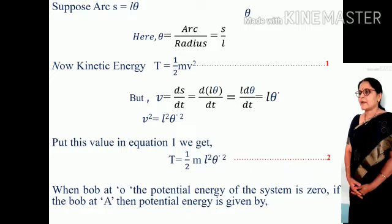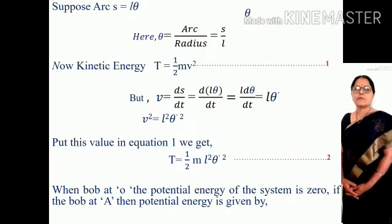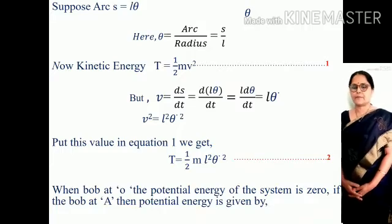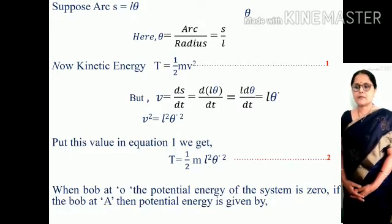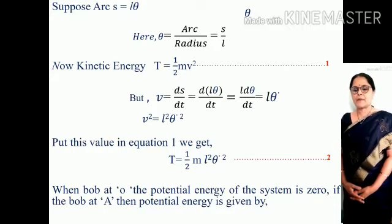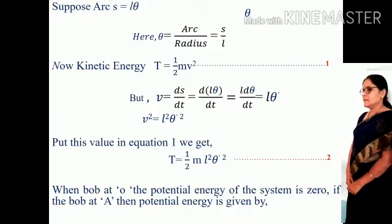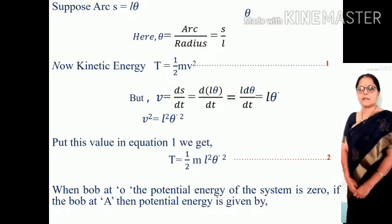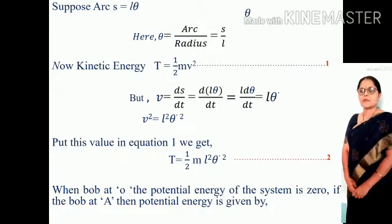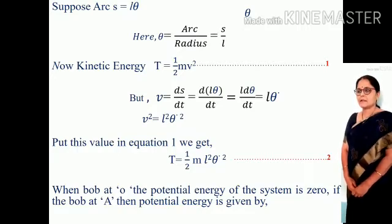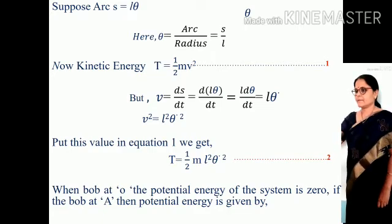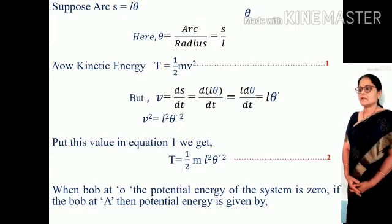But in classical mechanics, single time derivative can be written as one dot and double time derivative as double dot. Hence, L d theta by dt equals L theta dot. Therefore, by taking the square of velocity, v squared equals L squared theta dot squared. Then kinetic energy can be written as T equals one half m L squared theta dot squared.